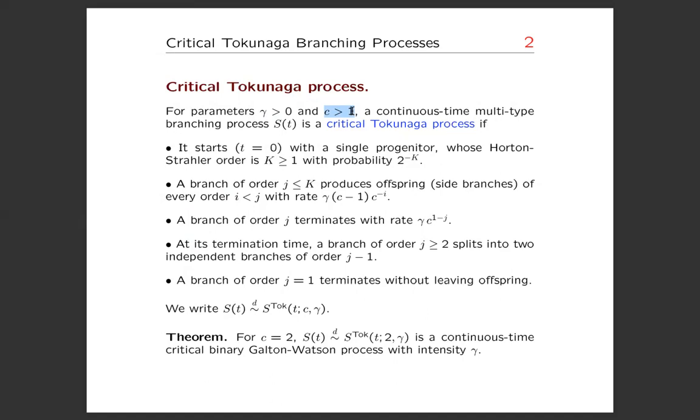The process is a continuous-time multi-type branching process. The types in this multi-type process are the Horton-Strahler orders. It starts with a single progenitor whose Horton-Strahler order is randomly determined as a geometric random variable with parameter one-half.